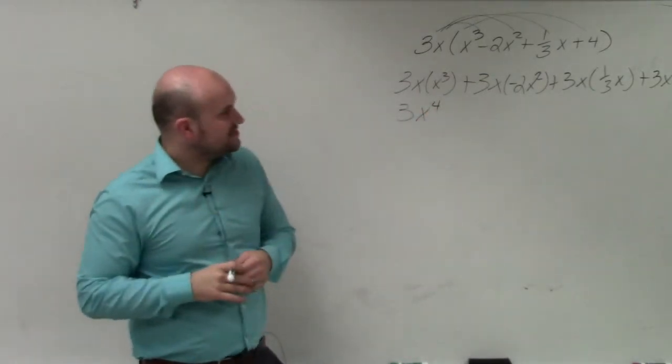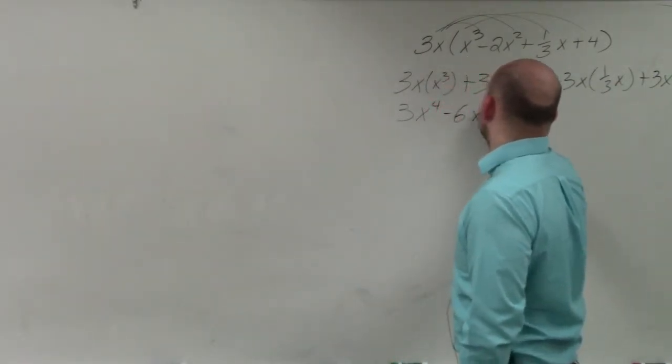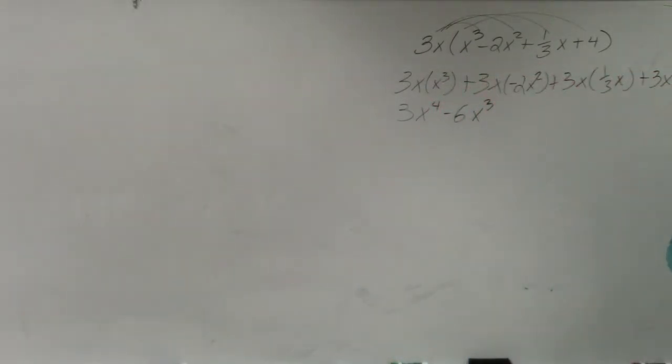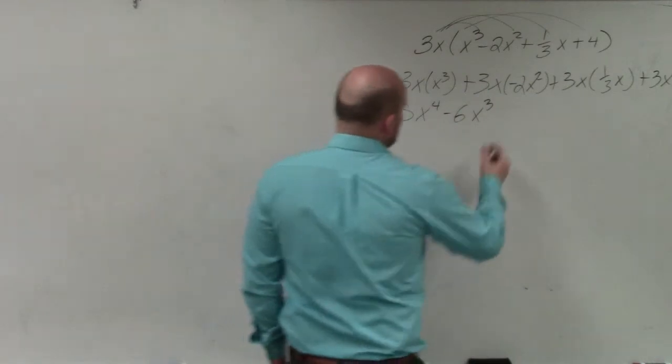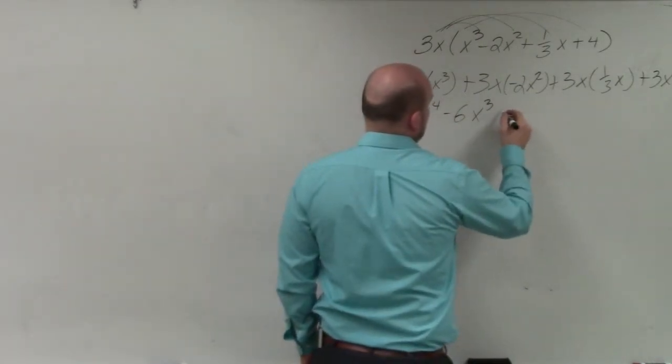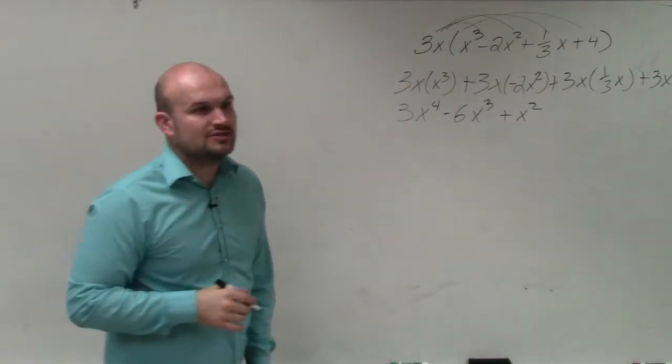3 times negative 2 is a negative 6. x times x squared is x cubed, so I have negative 6x cubed. 3 times 1 third, those are reciprocals of each other, so that's just left with 1. And then I have x times x is x squared. And 3x times 4 is 12x.